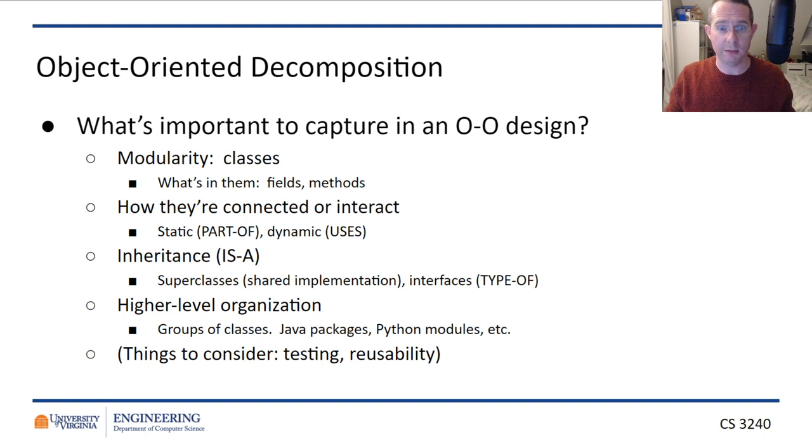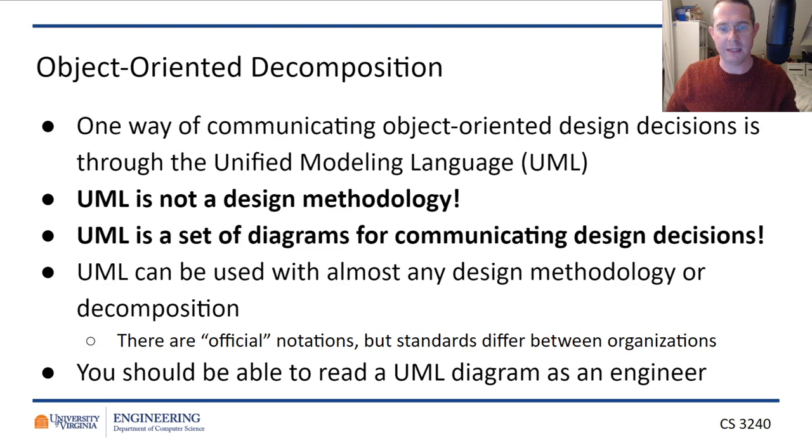So, when we're trying to do these OO decompositions, we want to figure out what are those modules? What are those good, cohesive things that don't have too much coupling with other modules? How are they connected? Basically, do they call each other? Is one part of another one? Is one a superclass of another? Do we wrap them together in large-level packages? These are things that you've thought about probably when you've actually coded, but not necessarily from a design perspective. Now, one more way that we communicate object-oriented decompositions is through UML, the Unified Modeling Language. Now, you might remember way back when when we talked about UML in the context of rational, the rational unified process.